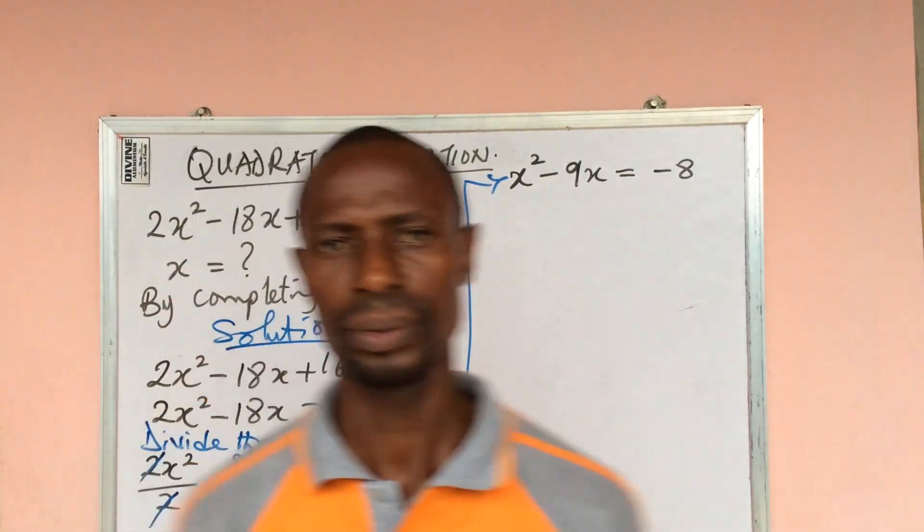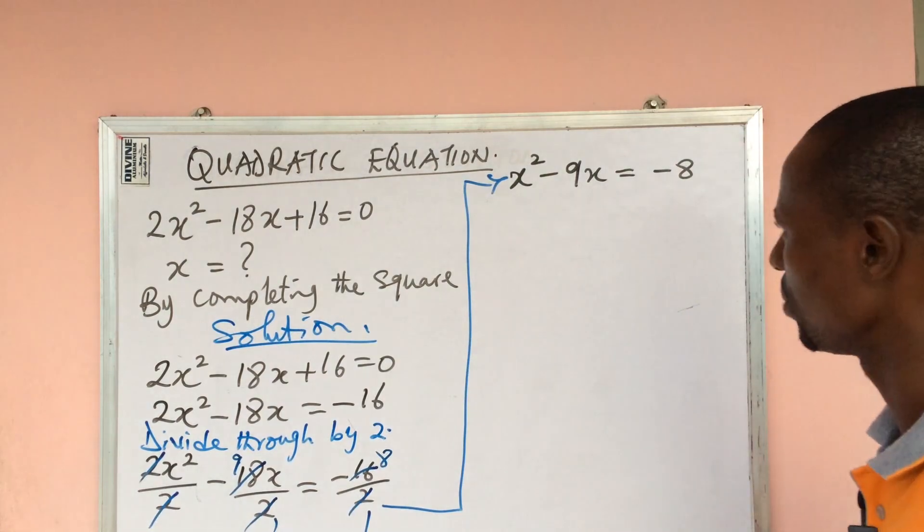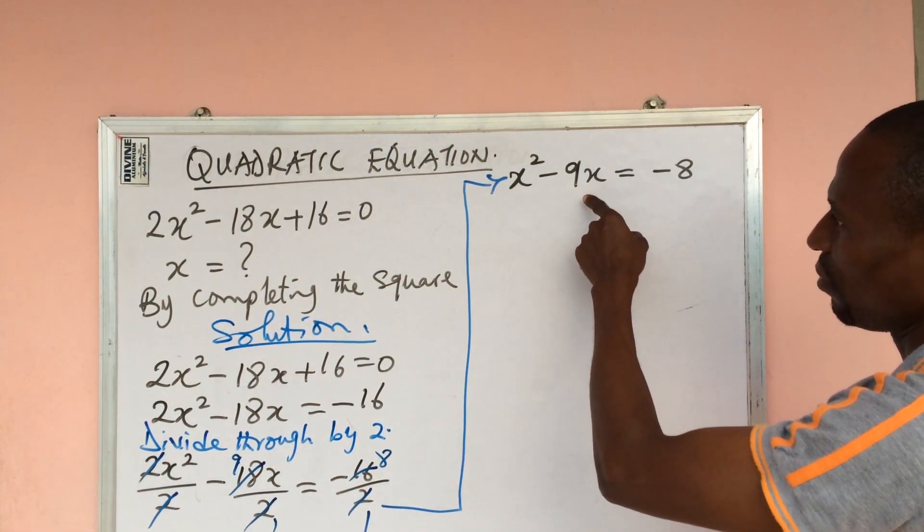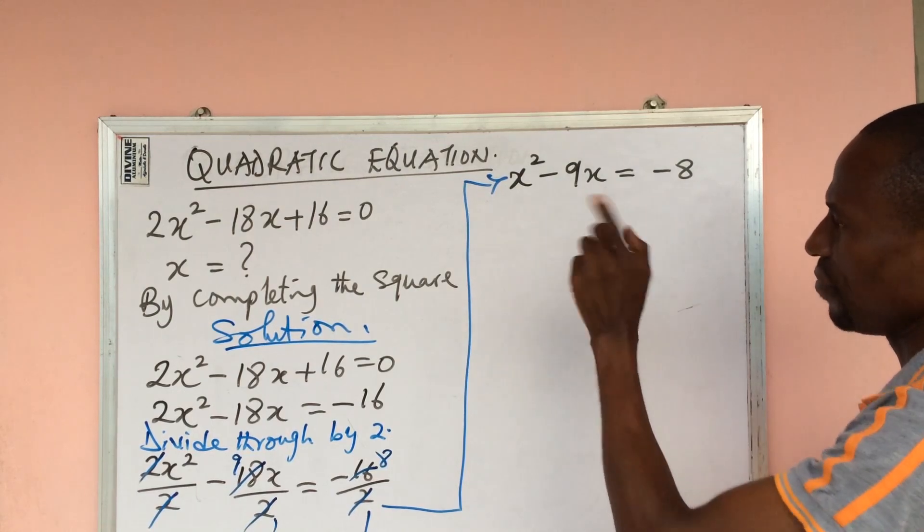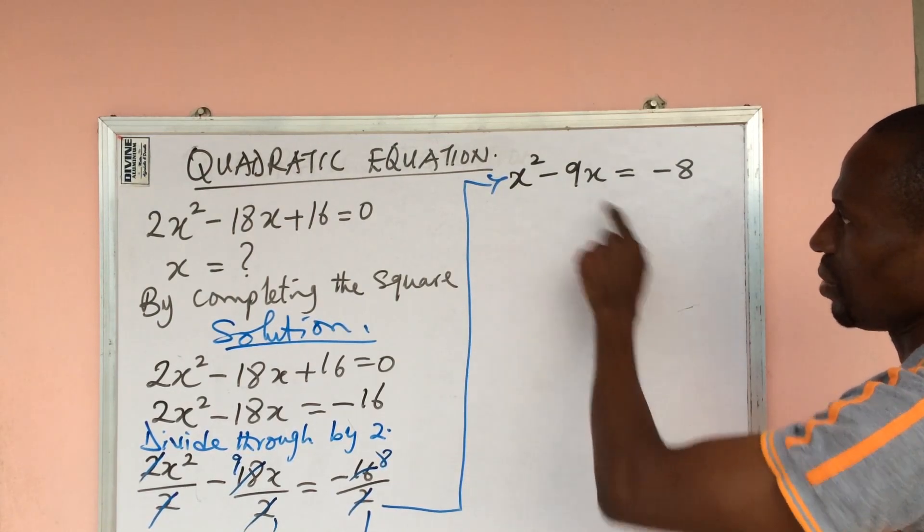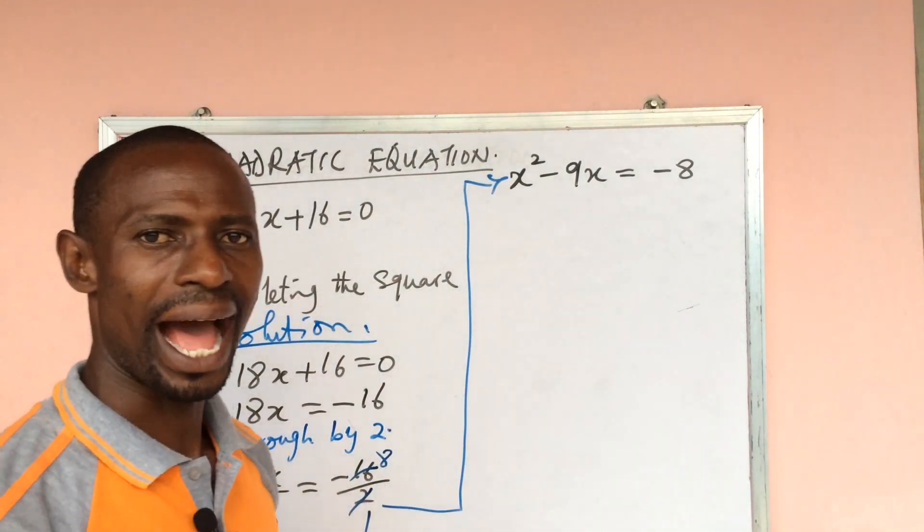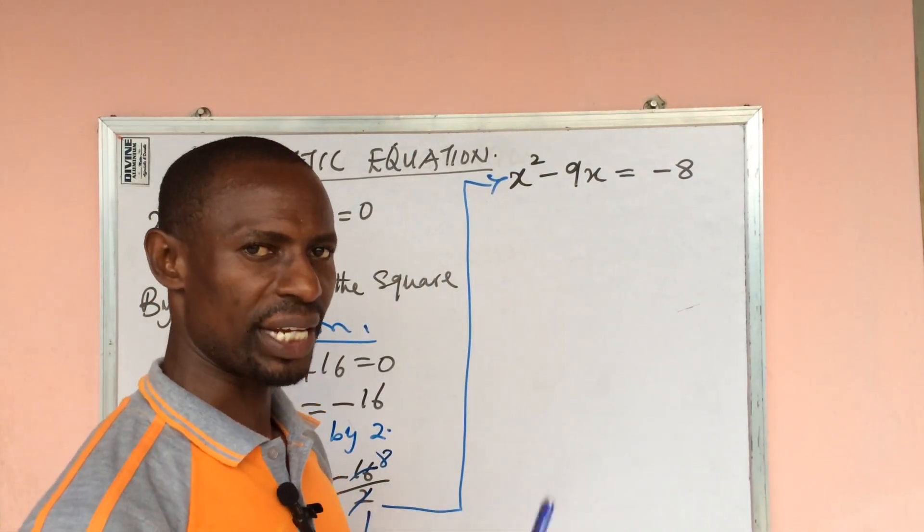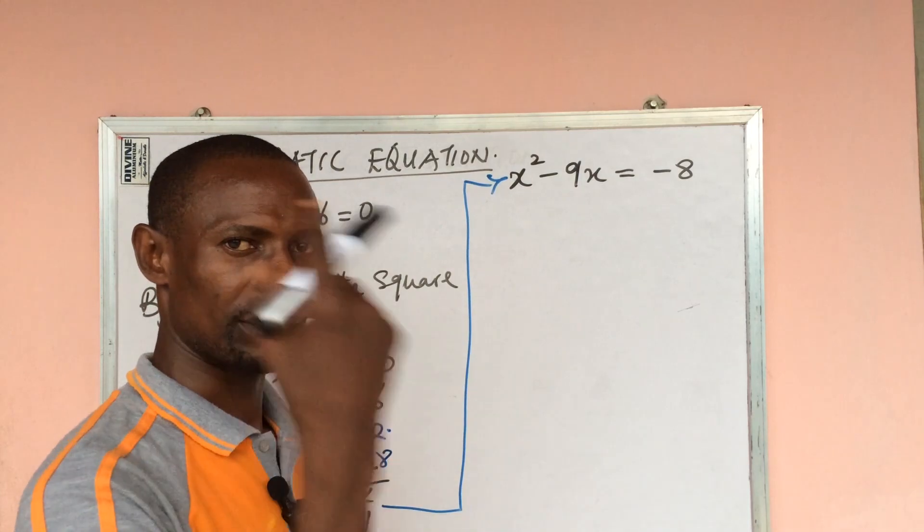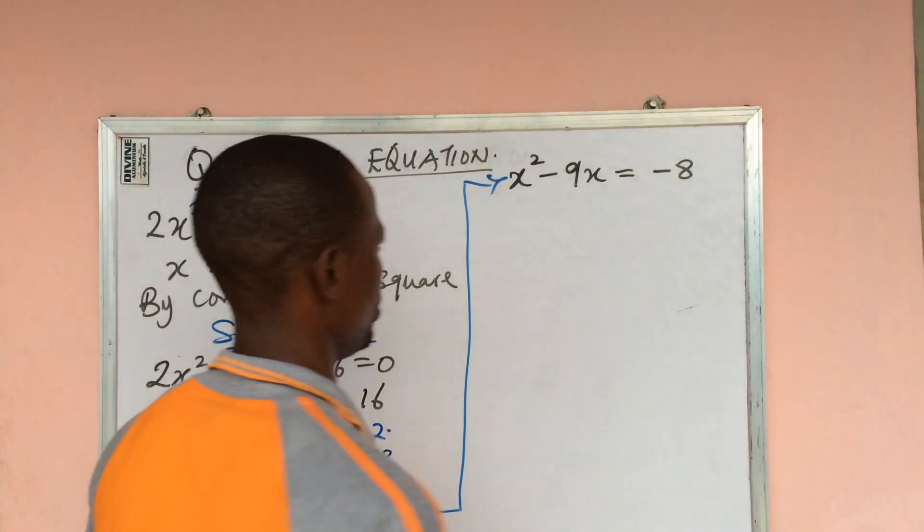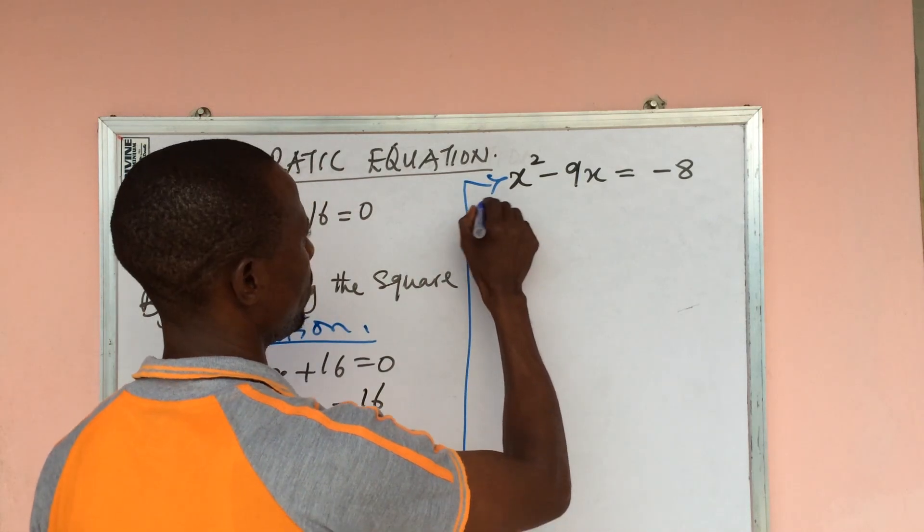Very simple. Now we are having the coefficient of x to be -9. So what we do is to find the half of the coefficient of x and square it and add it to both sides.